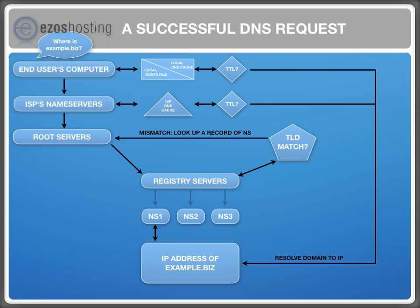The name servers keep track of the actual IP address of a domain. Once this address changes, it is broadcasted to NS1, then to NS2, and then replicated to NS3.